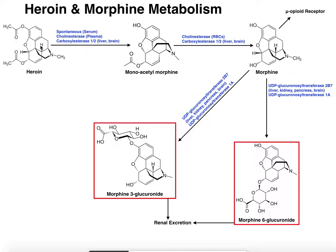Now let's look at the mode of metabolism of heroin and morphine. If you were to take heroin, it's actually first converted to monoacetyl morphine. The acetyl group at the top attached to the oxygen of the benzene ring gets hydrolyzed off. This can be done by cholinesterases in the blood and carboxylesterases in the liver and brain, but this reaction is actually known to be spontaneous — you don't even need an enzyme. It will just spontaneously lose its acetyl group and generate monoacetyl morphine.